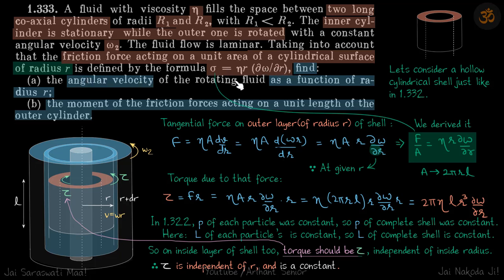Find the angular velocity as a function of radius r. So inside cylinder is stationary, outside part is moving with omega 2. So the velocity, the omega of liquid is also varying from 0 to omega 2. Now what exactly that function is that we need to find.